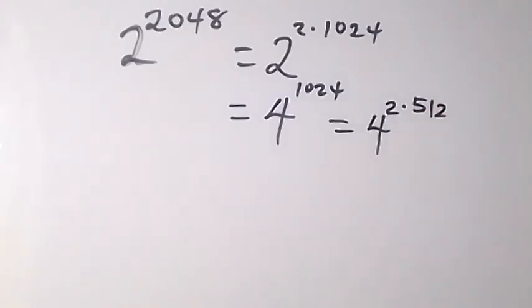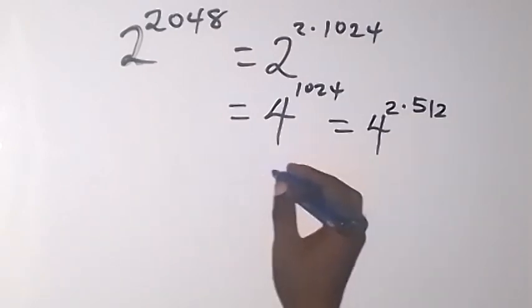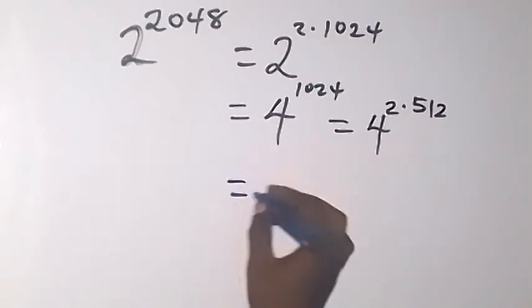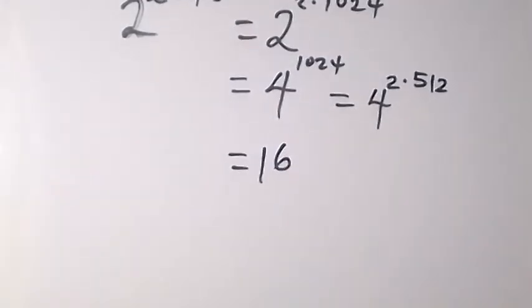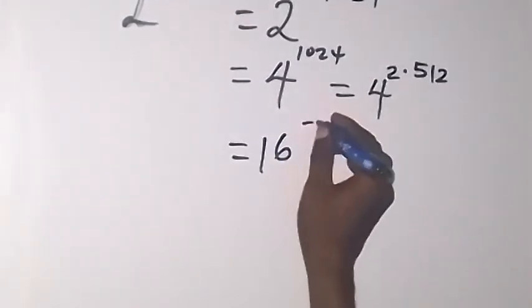So from there I also have that, which can also be written as 16. 4 squared is 16, raised to power 512.